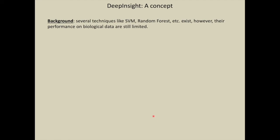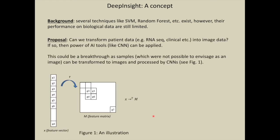Let us see the concept of DeepInsight. We have many machine learning techniques like support vector machine, random forest, AdaBoost, and their performance is still limited on biological data. The proposal is: can we transform a feature vector to an image? If that is possible, then CNN can be used.